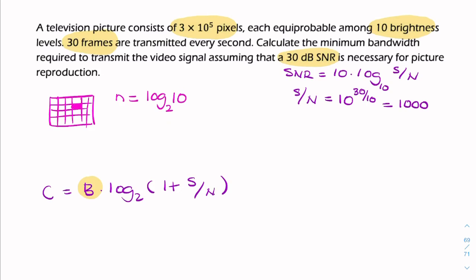So how many pixels do we have? We have 300,000 pixels per frame. We have 30 frames per second. So what we want is the data rate. So the data rate, R, is the number of pixels times the number of bits per pixel times 30. Because it says there are 30 frames every second.